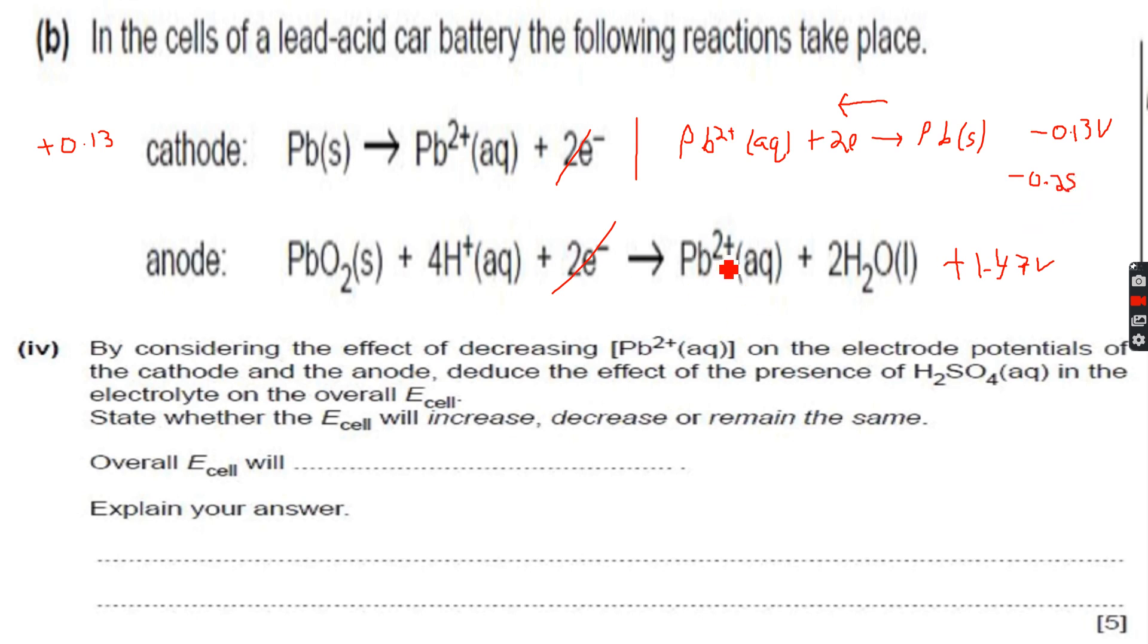And if here Pb2 plus is decreasing, so obviously this is also decreasing. So this time equilibrium will shift to the right to oppose the decrease. More Pb2 plus will be formed to oppose the decrease. So since equilibrium is shifting to the right, more Pb2 plus will be formed. So this will, so the electrode potential will become more positive. Let's say, plus 1.6.